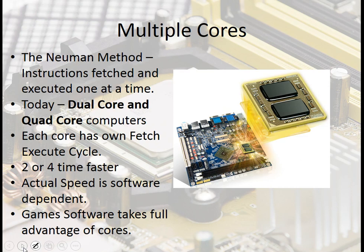This means the CPU can be running two or four times faster. The actual speed benefit is very much dependent on the software. For instance, a word processor won't necessarily take advantage of a quad core processor, but games and video software will be built to take advantage of those processors.